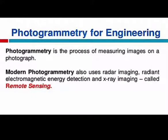For engineers, photogrammetry provides an effective tool in planning, building, and ongoing inspection of civil engineering projects, combining basic photogrammetry with modern remote sensing techniques. Photogrammetry is the process of measuring images on a photograph. Modern photogrammetry also uses radar imaging, radiant electromagnetic energy detection, and X-ray imaging — this is called remote sensing. Modern photogrammetry includes radar imaging, radiant electromagnetic detection, X-ray mapping, and the use of electromagnetic waves in the engineering field.